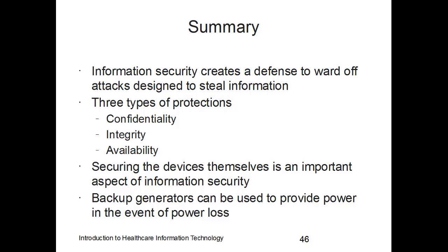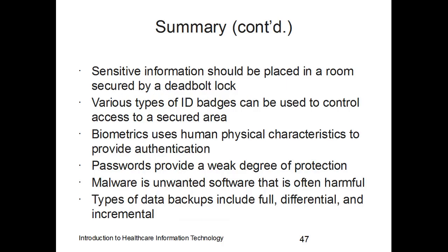That brings us to the end of chapter number seven. A quick summary: information security creates a defense to ward off attacks designed to steal information; there are three types of protections — confidentiality, integrity, and availability; securing devices is an important aspect; backup generators provide power during outages; sensitive information should be in a room secured by a deadbolt lock; ID badges control access; biometrics uses physical characteristics for authentication; passwords provide weak protection; malware is unwanted harmful software; and data backups include full, differential, and incremental types. We will continue with chapter number eight, advanced healthcare information security.